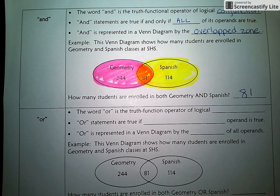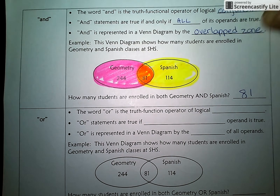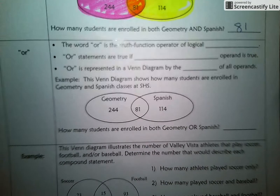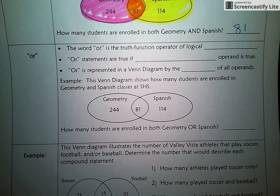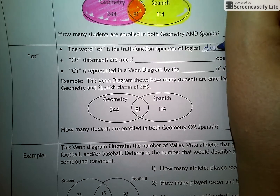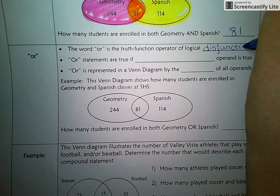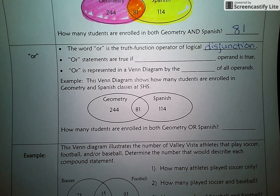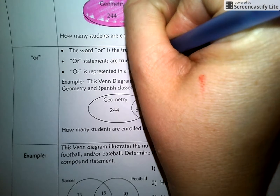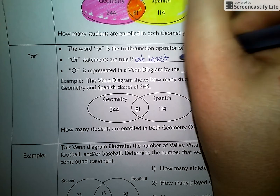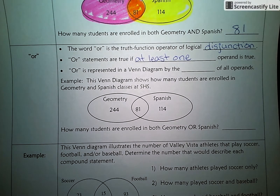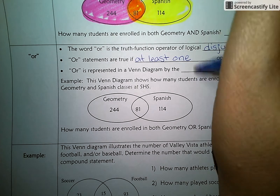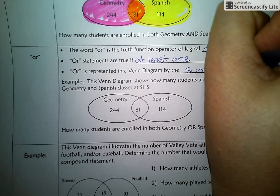Let's do the exact same problem, but think it through as if it were an OR statement. The word OR is the truth function operator of a logical disjunction. OR statements can be true if at least one operand is true — not everything in the statement needs to be true. OR is represented in a Venn Diagram by the sum of all the operands.